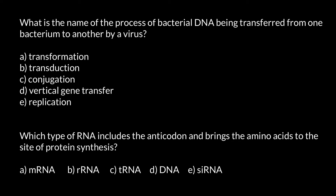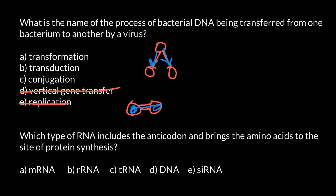We can cross out answer E right away, because replication would be an example of vertical gene transfer from mother cell to daughter cells through binary fission. We can also cross out answer D — that is also an example of vertical gene transfer. Conjugation would be an example of so-called bacterial sex, when two bacteria come into contact and may exchange genetic material. We can cross out that answer too.